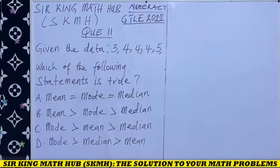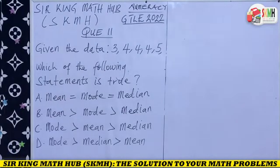Hello everyone, welcome to Sir King Math Hub, the solution to your math problems. This is from the 2022 numeracy exam, question number 11. Given the data: 3, 4, 4, 4, and 5, which of the following statements is true?